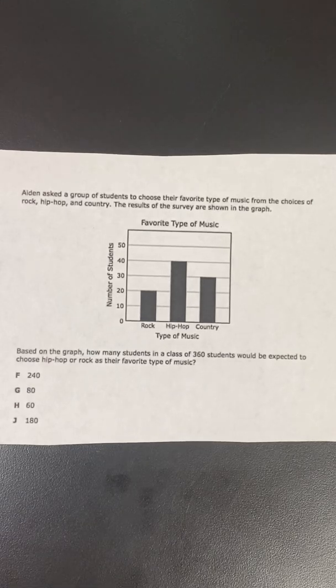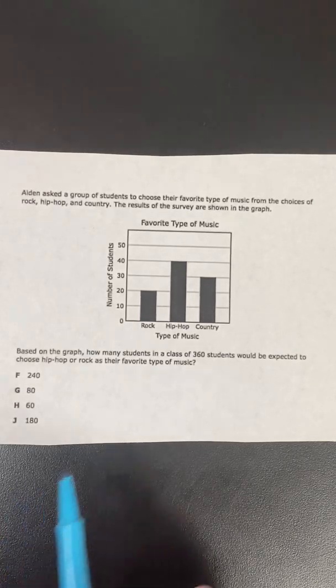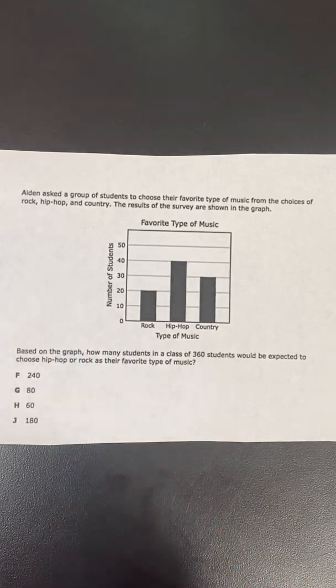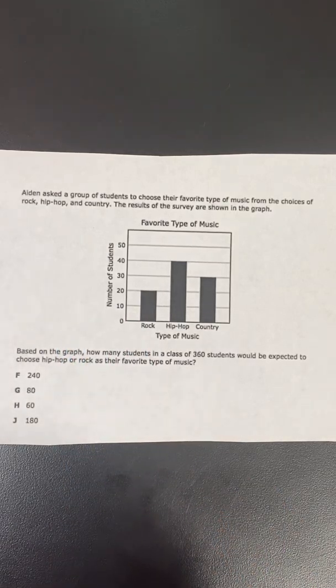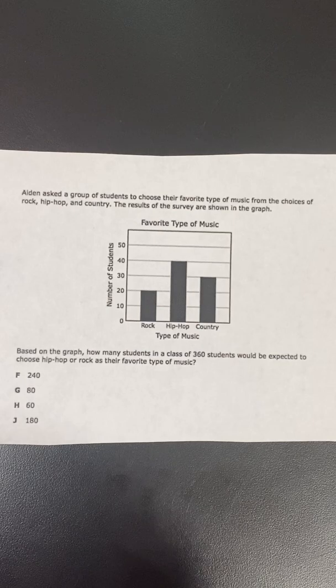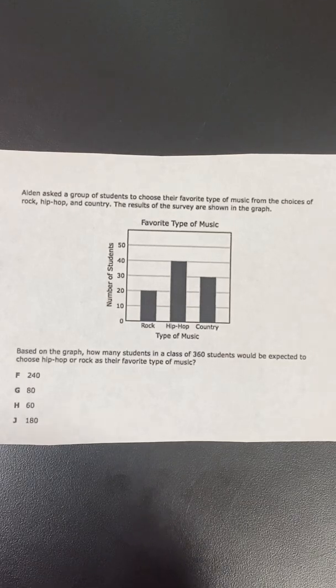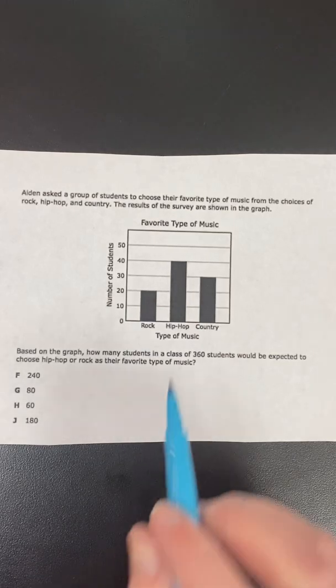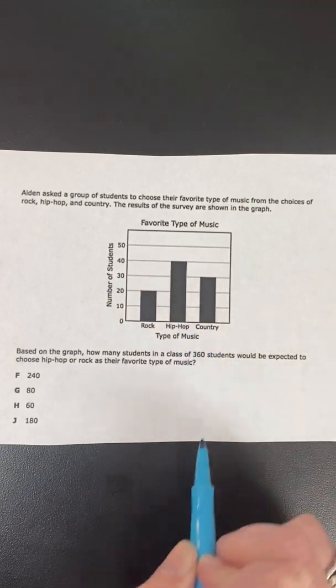Alright, so here's one of our star questions that we're going to look at together. So first it says, Aiden asked a group of students to choose their favorite type of music from the choices of rock, hip-hop, and country.